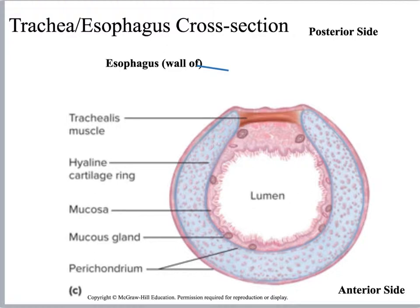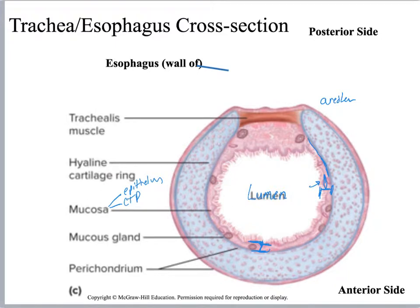Let's review this. You've got this lumen, and right here is the mucosa. Here you will have your PCCE — you will see the cilia. There will also be areolar connective tissue proper that's part of that mucosa. Remember, mucosa consists of at minimum epithelium and connective tissue proper, and sometimes we throw in smooth muscle as well. Here you can see the submucosa, which in this case is mostly areolar connective tissue proper, but you've also got embedded mucous glands. And then you see the huge hyaline cartilage, which is the tracheal ring in this case.